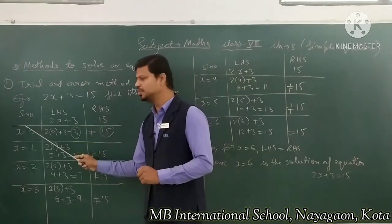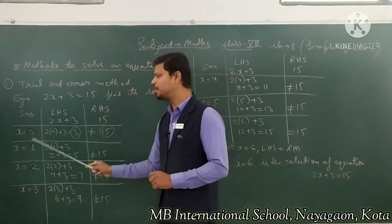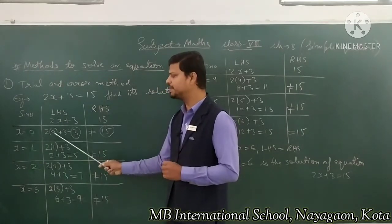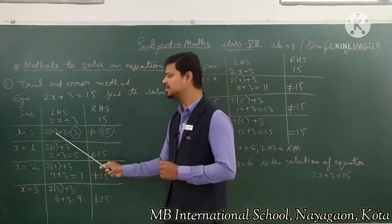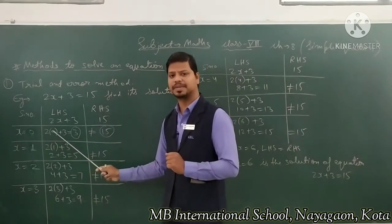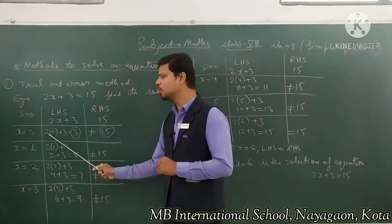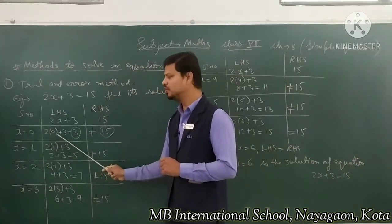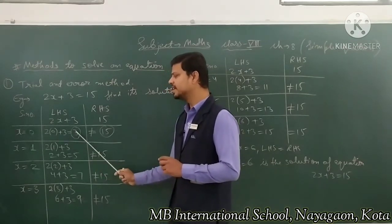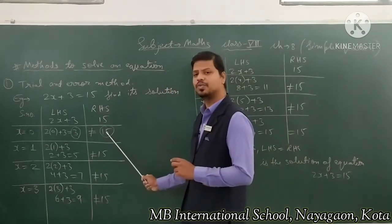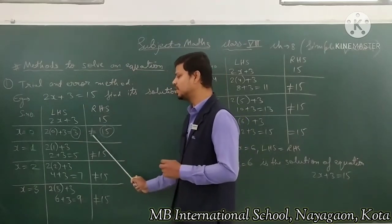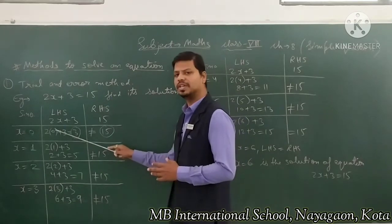First, we put x = 0 in the equation. Wherever x appears, we put 0. So LHS = 2 × 0 + 3. We multiply first, then add: 2 × 0 = 0, and 0 + 3 = 3. Is 3 equal to 15? No, so LHS is not equal to 15. We move on.